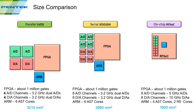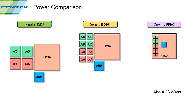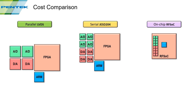Including six ARM cores, the RFSOC has them on-chip; a standalone six-core ARM processor adds to the other solutions. In area, the RFSOC takes about 1,600 mm², the serial interface system about 2,860 mm², and the parallel system about 3,210 mm² — but that's only for four channels. Power: RFSOC requires about 28 watts, JESD204 about 52 watts, and parallel about 34 watts for half the channels. Cost per component: RFSOC ~$8,000, JESD204 total ~$13,200, parallel total ~$15,200 — again for four channels.